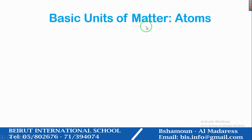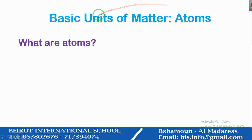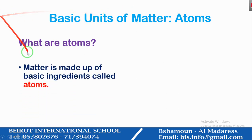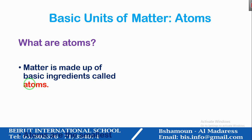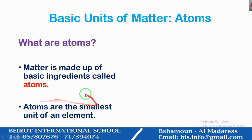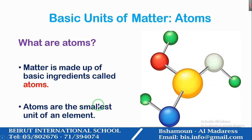Basic units of matter: Atoms. What are atoms? Matter is made up of basic ingredients called atoms. Similarly, living things are made up of basic units called cells. Non-living things, or matter, is made up of basic units called atoms. So atoms are the smallest unit of an element.